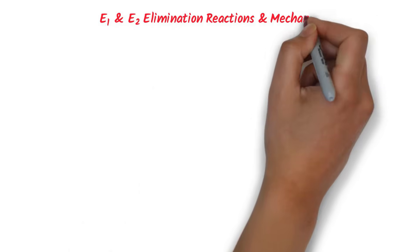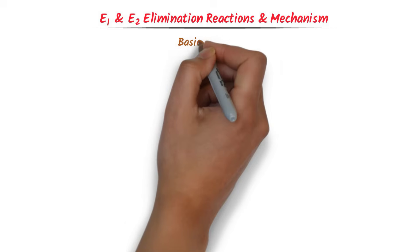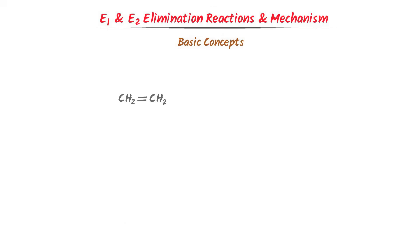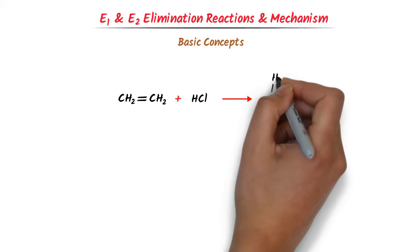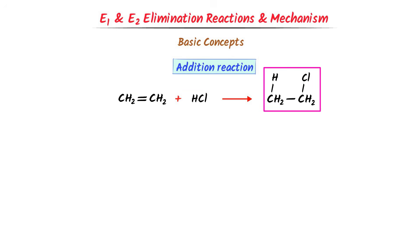E1 and E2 Elimination Reaction and Mechanism. Let me teach you some basic concepts. Consider an alkene like ethene. We add HCl to it. After reaction, we get an alkyl halide. This reaction is called addition reaction because two reactants get together to form a single product. With the help of addition reaction, we convert unsaturated hydrocarbon to a saturated compound.